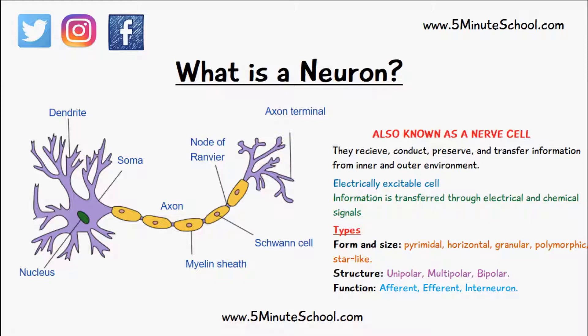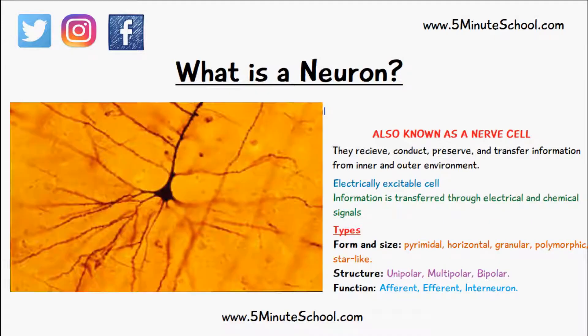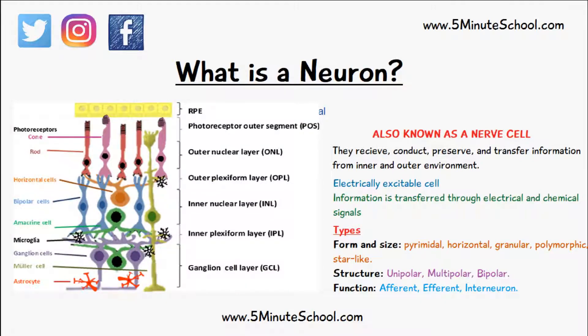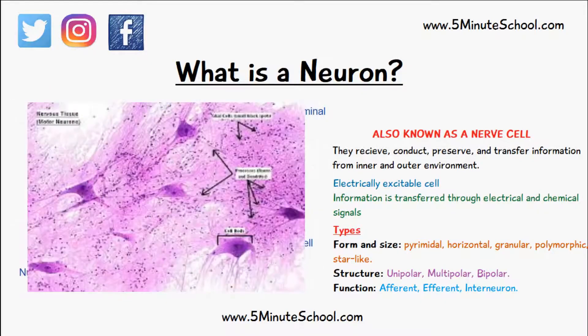We can classify neurons based on their type — based on their form and size, their structure, and their function. There are different forms and sizes of neurons with different shapes: pyramidal, horizontal, granular, polymorphic, and star-like.